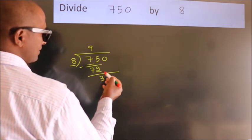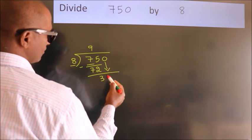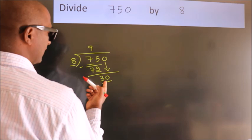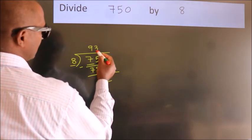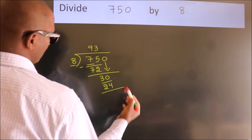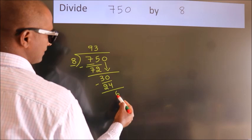After this, bring down the beside number. So 0 down, making 30. A number close to 30 in the 8 table is 8 threes, 24. Now we subtract and get 6.